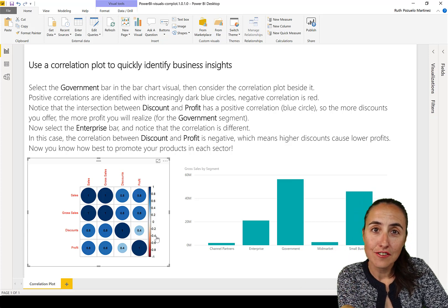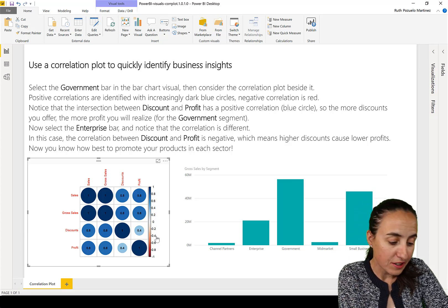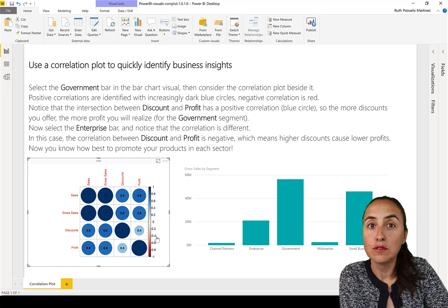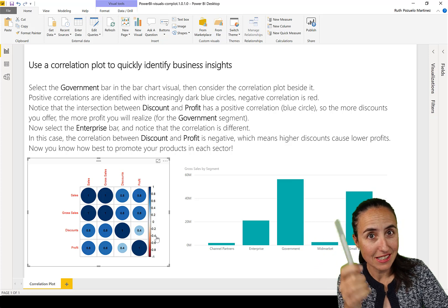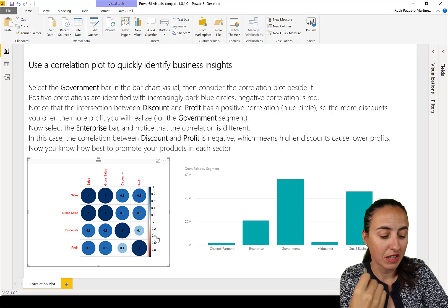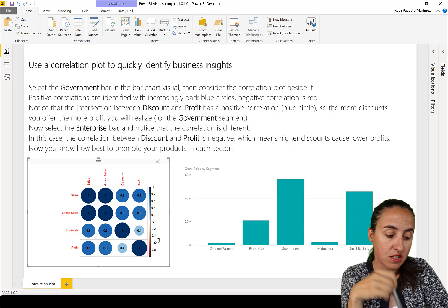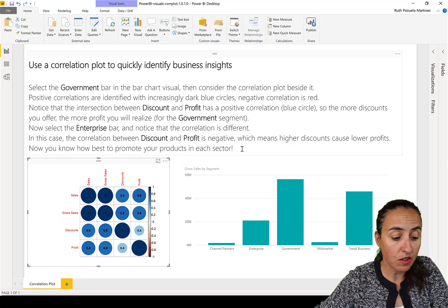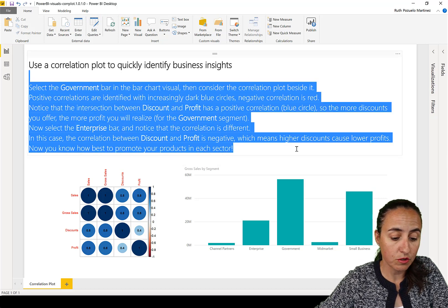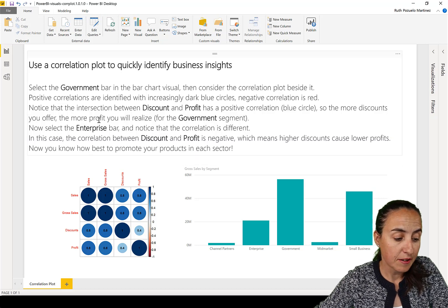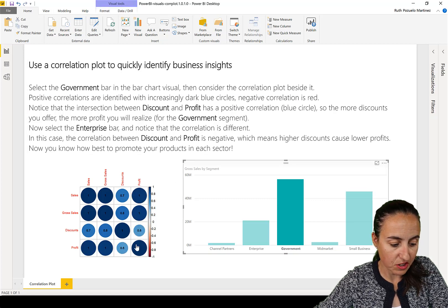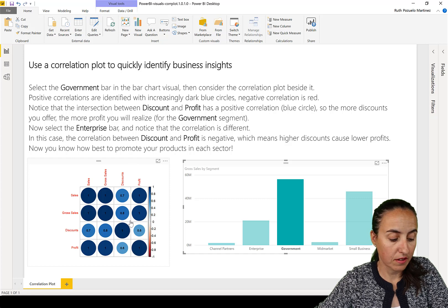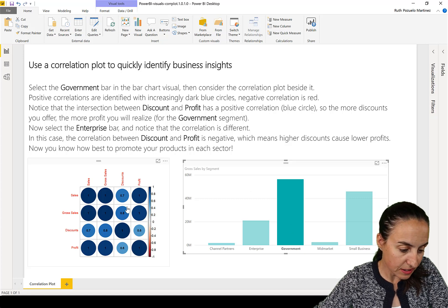So you know that is the coefficient of correlation because it goes from one to minus one. If you would go from zero to one, you'll know that there is the coefficient of determination, but this is the coefficient of correlation. So it tells you here that you've done a really good job explaining this. And it is selected the government, they say, in the chart visual, and then look at the correlation.